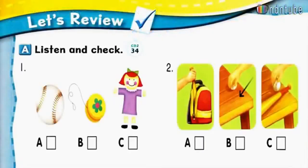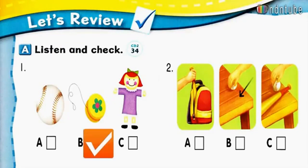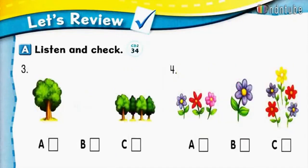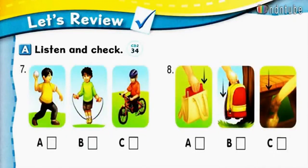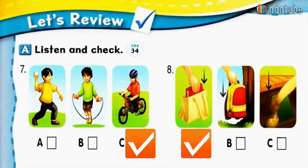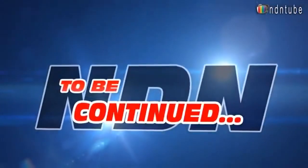Page 56. Let's review Units 5 and 6. A. Listen and check. Number 1: what is it? It's a yo-yo. Number 2: put the baseball by the bat. Number 3: there is one tree. Number 4: how many flowers are there? There are five flowers. Number 5: where's the bug? It's on the bag. Number 6: where's the bat? It's under the table. Number 7: ride a bicycle. Number 8: put the book in the bag.